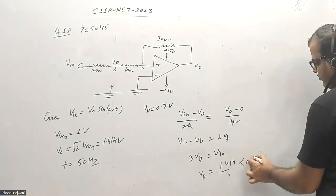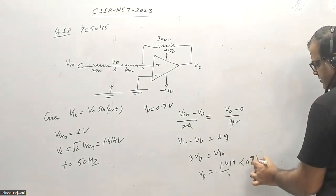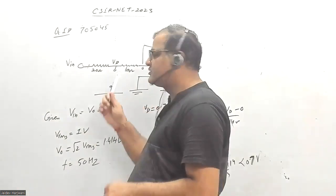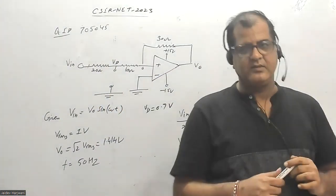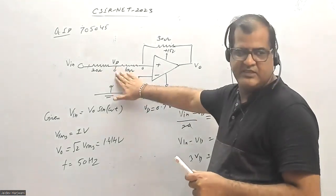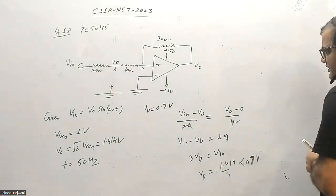That means this voltage cannot drive this diode into forward bias. This diode will be in open circuit condition. That means there will be no current flow. So the question asks what is the maximum current flow from this circuit.